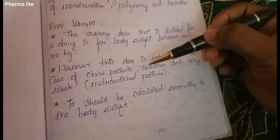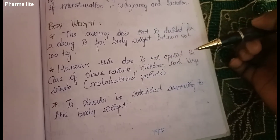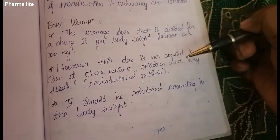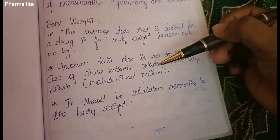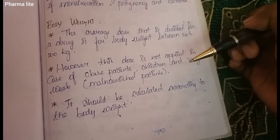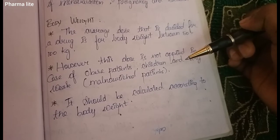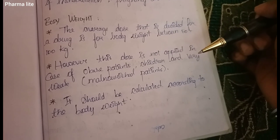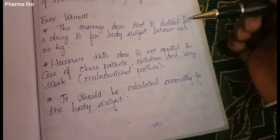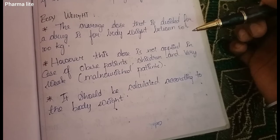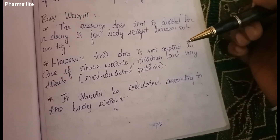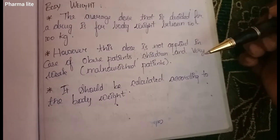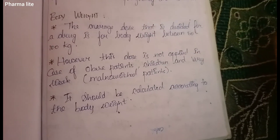However, body weight-based dosing is not applied in the case of obese patients, children, and very weak patients. For obese patients, the extra weight is mostly fat rather than muscle. For children, the dose should be calculated specifically according to their body weight.